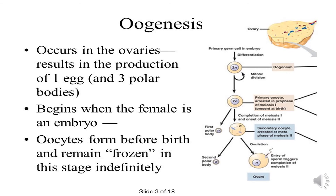Now come to oogenesis. Oogenesis occurs in the ovaries, resulting in the production of one egg and three polar bodies. It begins when the female is an embryo. Oocytes form before birth and remain frozen in that stage indefinitely. So when a female child is born, her ovaries already have some frozen eggs — this is called oogenesis, but they are in the dormant condition.